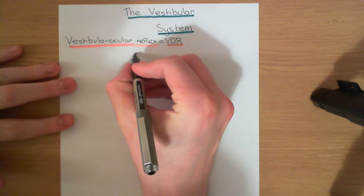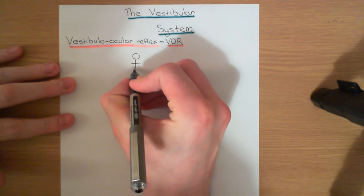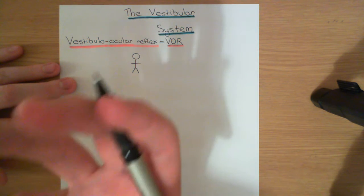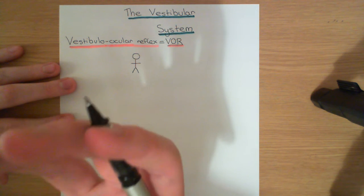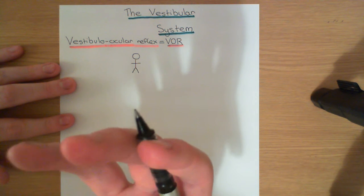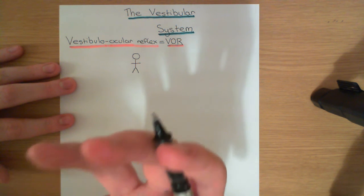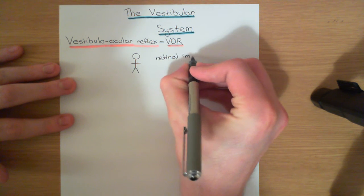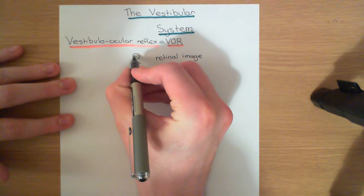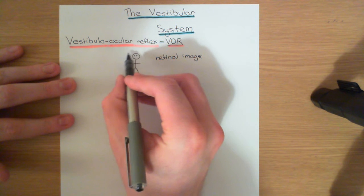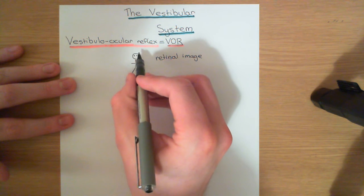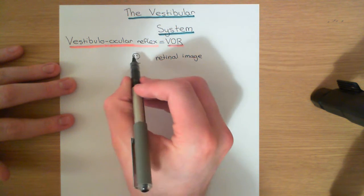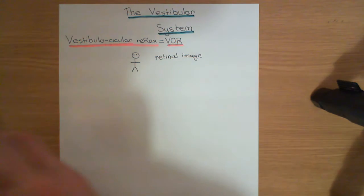Let me draw a little picture. The visual system is very good at collecting visual information provided the retinal image is constant — it's not very good when the retinal image is changing. By 'retinal image,' I mean the light falling on the back of the eye. When the eyes are stationary, light falls on the retina in a constant way, and that information is continuously processed by the brain.